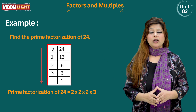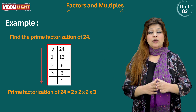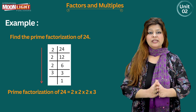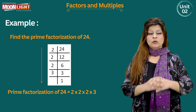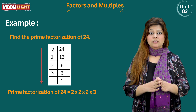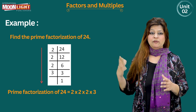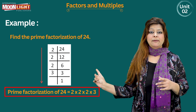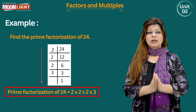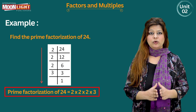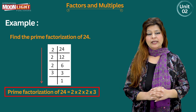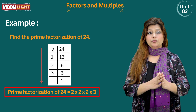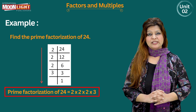We write all these prime factors as a product, placing a multiplication sign between each one. The prime factorization of 24 equals 2 multiplied by 2 multiplied by 2 multiplied by 3. This is the final prime factorization of the number 24. In this way we find the prime factorization of different numbers, written as a product.